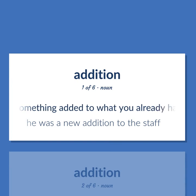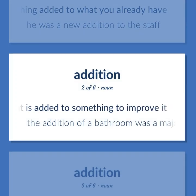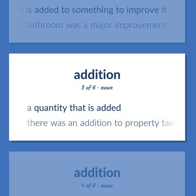Addition: Something added to what you already have. Example: He was a new addition to the staff. A component that is added to something to improve it. Example: The addition of a bathroom was a major improvement. A quantity that is added. Example: There was an addition to property taxes this year.